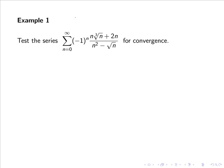From the alternating series test, we know that we need to check that the limit as n goes to infinity of a_n equals zero, and that |a_{n+1}| ≤ |a_n|.